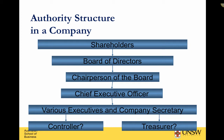You then have various executives and a company secretary. A lot of companies now have a COO, which is the chief of operations, a CFO, which is chief of financial operations, and various other executive positions — for example, the executive in charge of the Asian unit. There may also be a financial controller and a treasurer. The most senior position that an accountant can have is the chief financial officer, otherwise known as CFO.